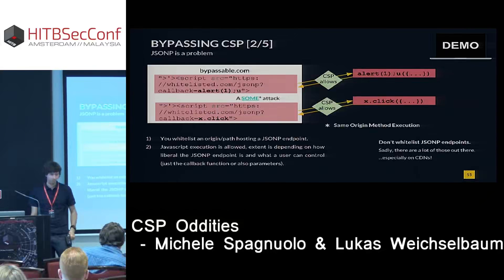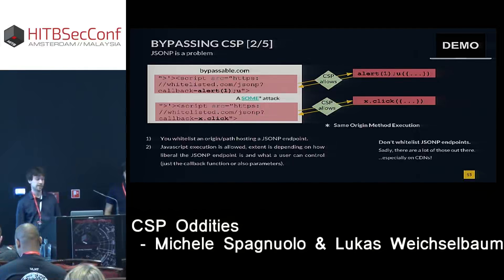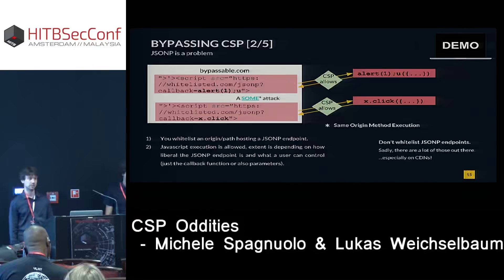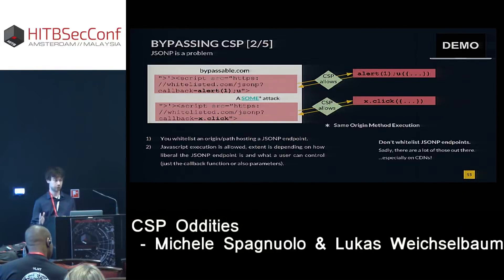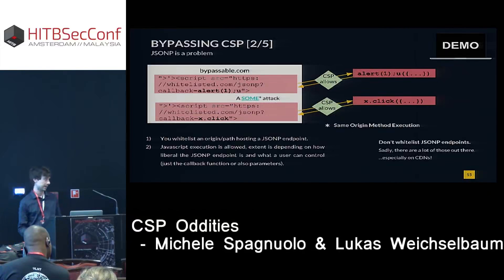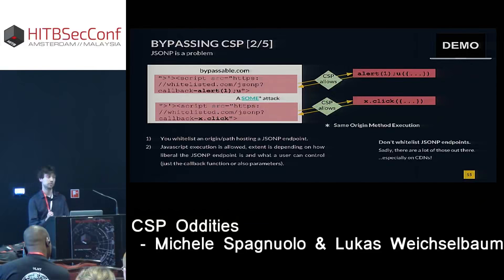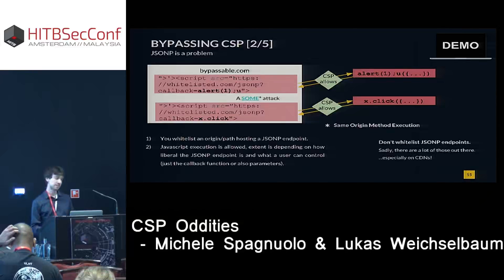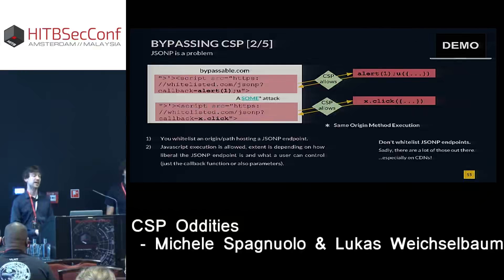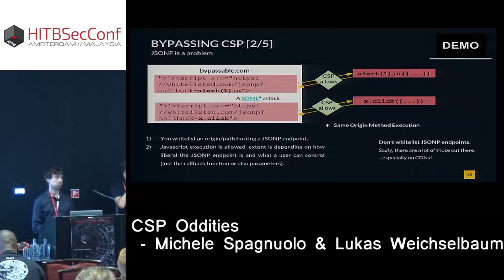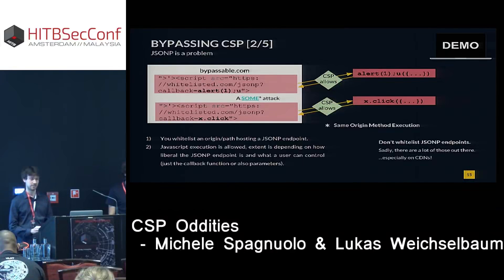JSONP is a problem for CSP, and this is not very widely known. We want to stress that this is a real problem and a deal-breaker. Even if you whitelist not just full domains but specific paths, almost all CDNs have at least one JSONP endpoint — meaning you can't safely whitelist CDNs. Even APIs you legitimately want to source, like Google APIs, might support JSONP. If they do, you can always pass a callback parameter and get execution.